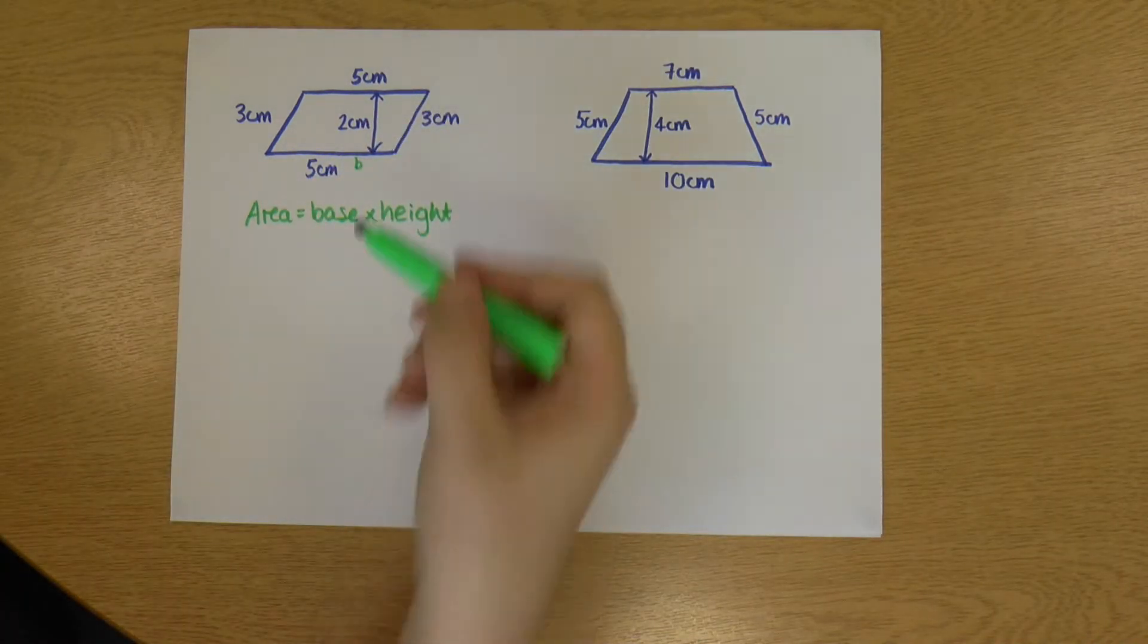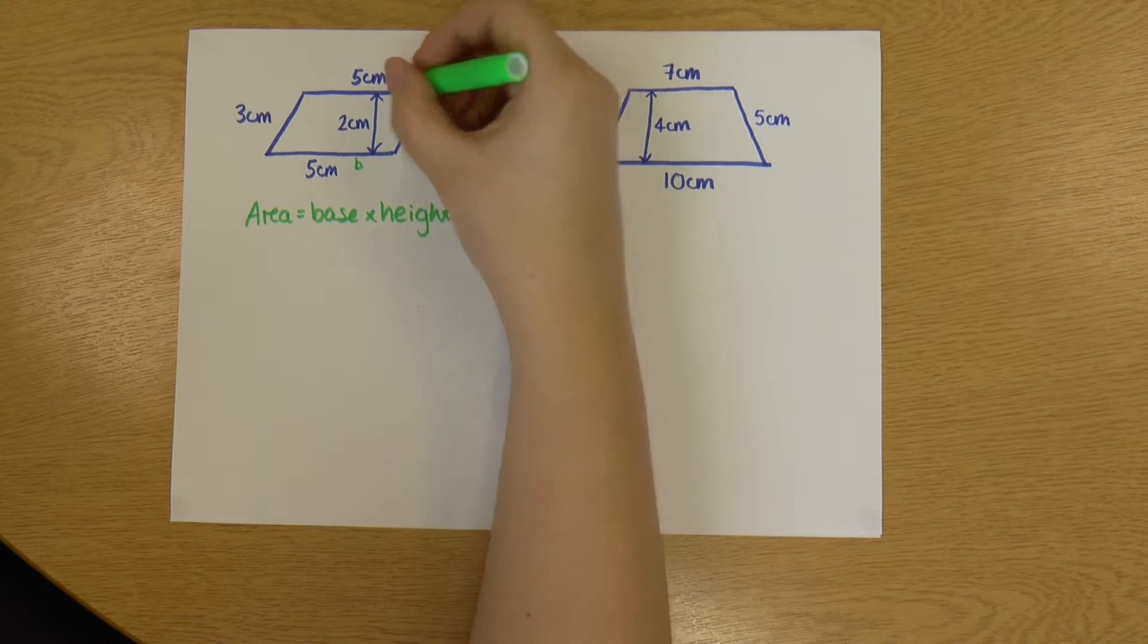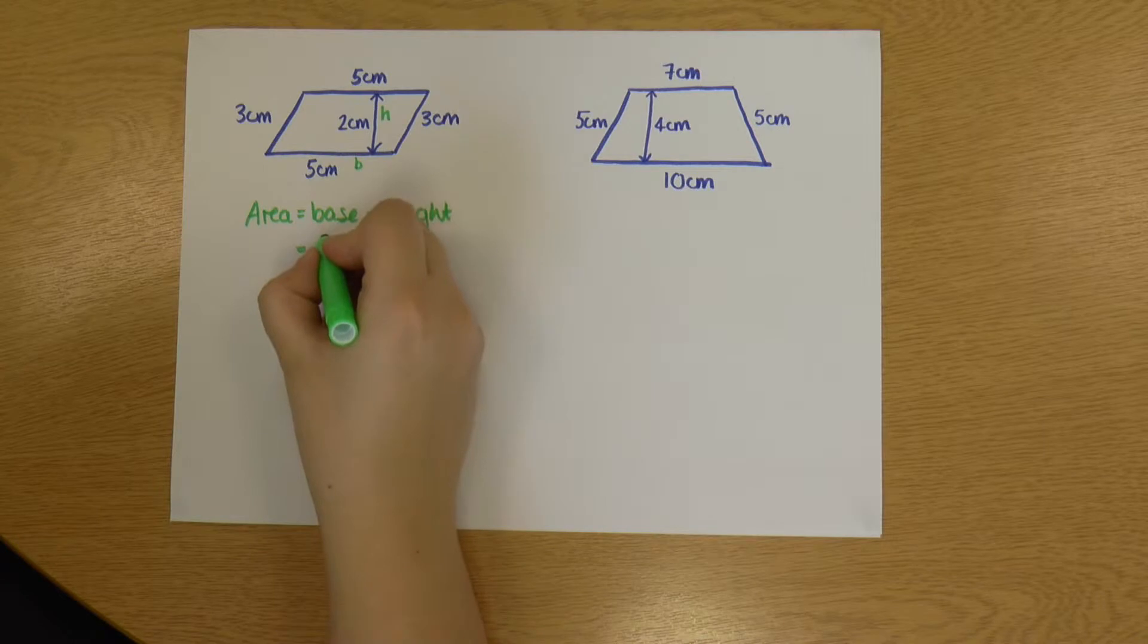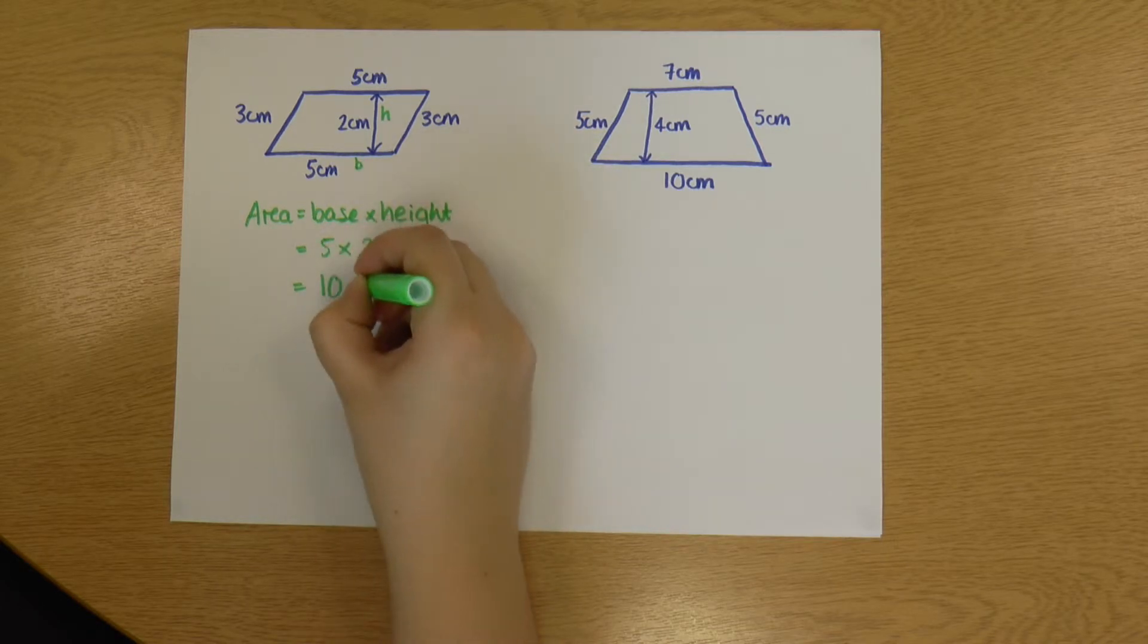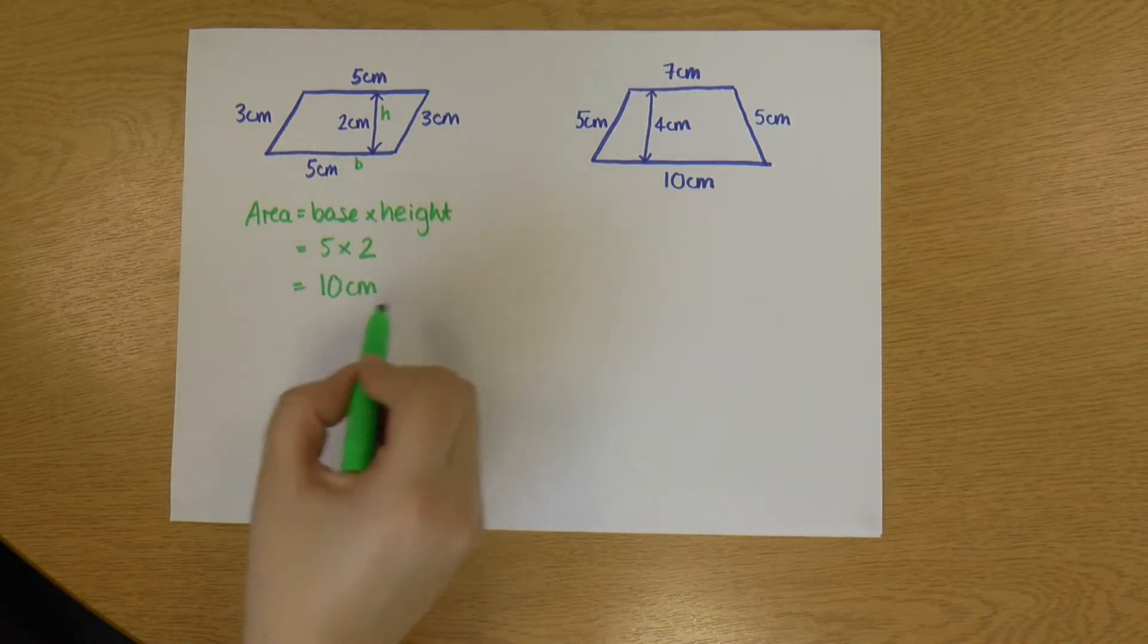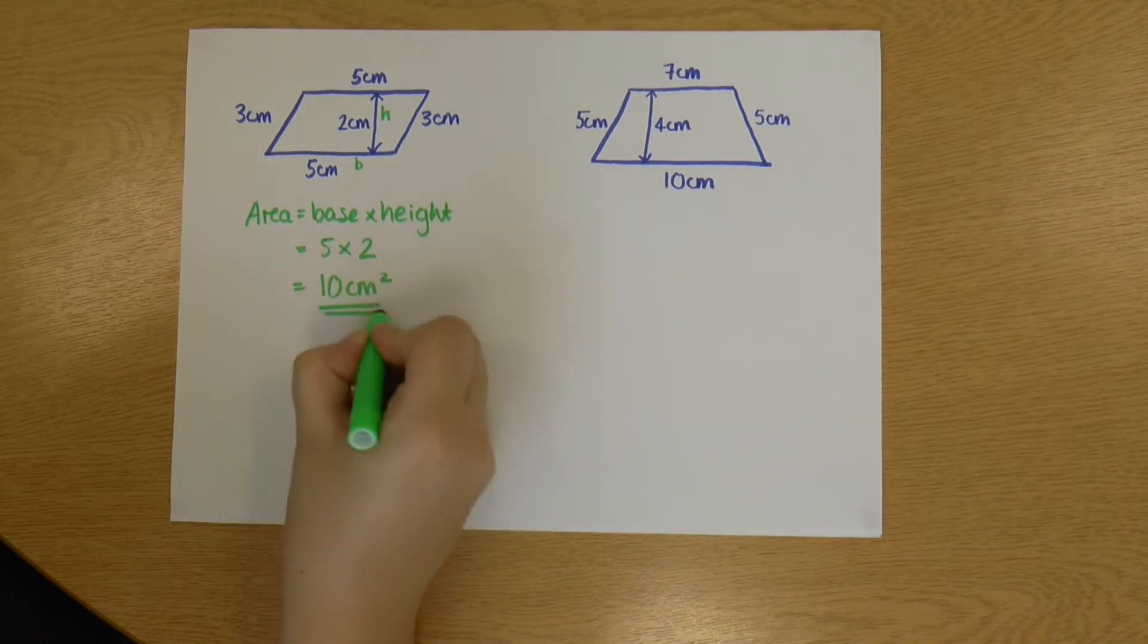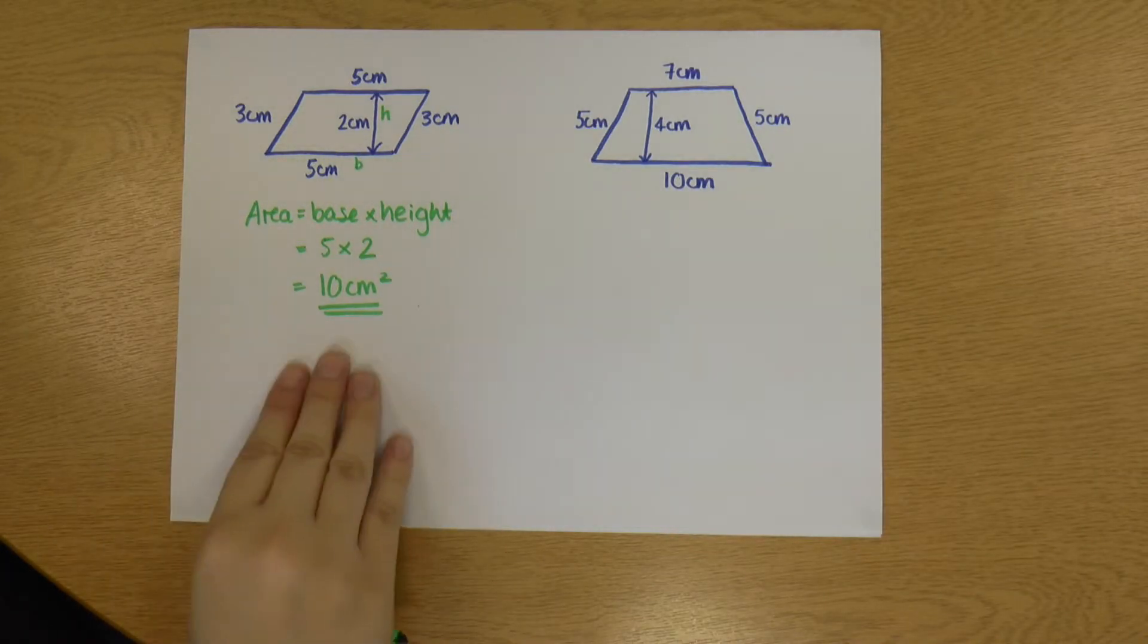My height is not these diagonals - it's the height directly up between the top and the bottom. So this is my height. My base is 5 and my height is 2. So the area of this parallelogram is 10, and it's unit squared, so centimeters squared. That's parallelograms - they work exactly the same way as rectangles.